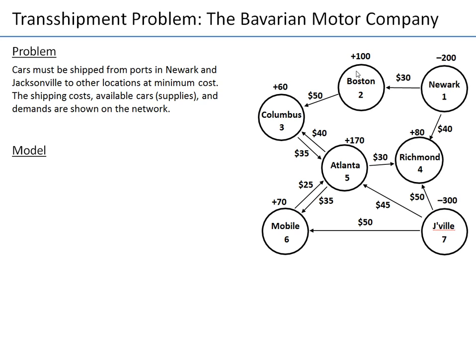We have demands of 80, 170, 160, and 70 at the other nodes. Every other node apart from those two supply nodes has demand. Our problem is to transport cars to satisfy demands at other places — these are dealers that ordered so many units of a certain car model. In network flow models, we assume we are transporting one identical product with multiple units, and we do not distinguish between units.